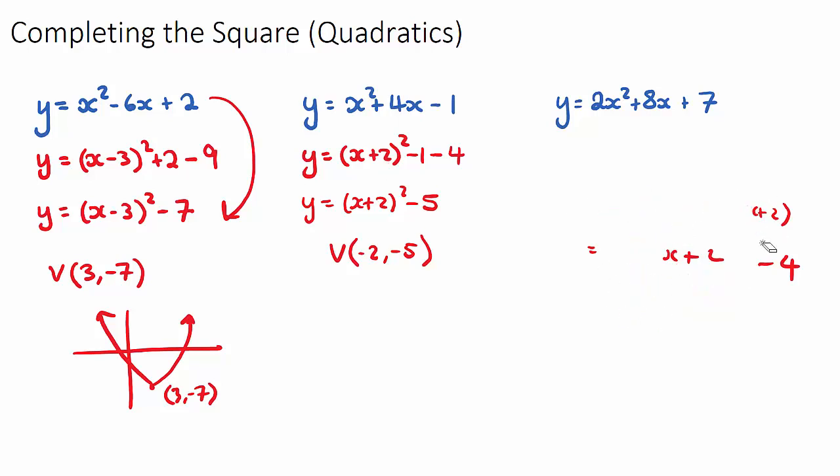Okay, so this last example, this is a bit of a trickier one. If we have a value here in front of our x squared, which is not 1, it's 2, for example, we need to do a little bit of an extra step. So we have y equals, what we want to do is we want to factor out the 2, whatever this a value is, a, b, c, from the first two terms. So we're going to have 2 bracket x squared plus 4x, and then we have our remaining constant plus 7, and then we need to complete the square with this here.